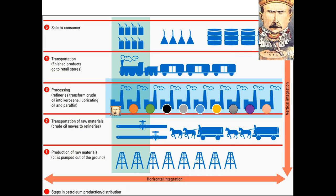Now let's talk about the other type: horizontal integration, which is up and down — wait, vertical is up and down. Here's an example: if you wanted to vertically integrate the oil industry, you'd have to control the oil pumping, drilling, transportation, refining, and direct sales to the customer — all those steps.